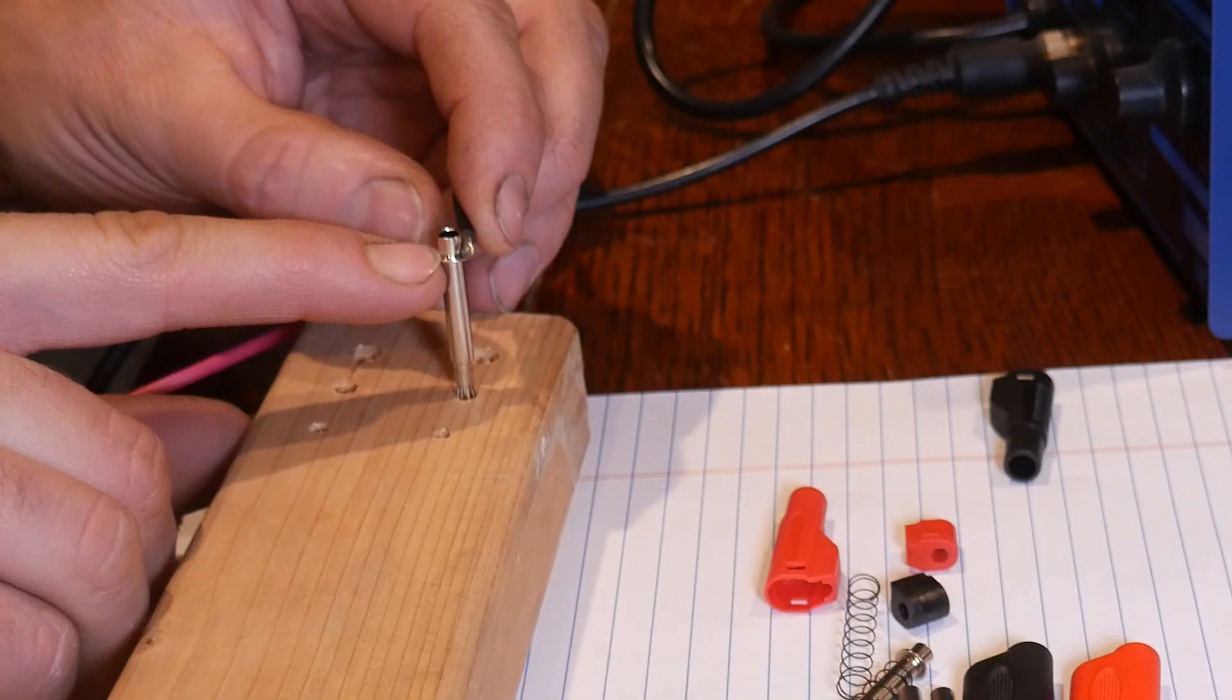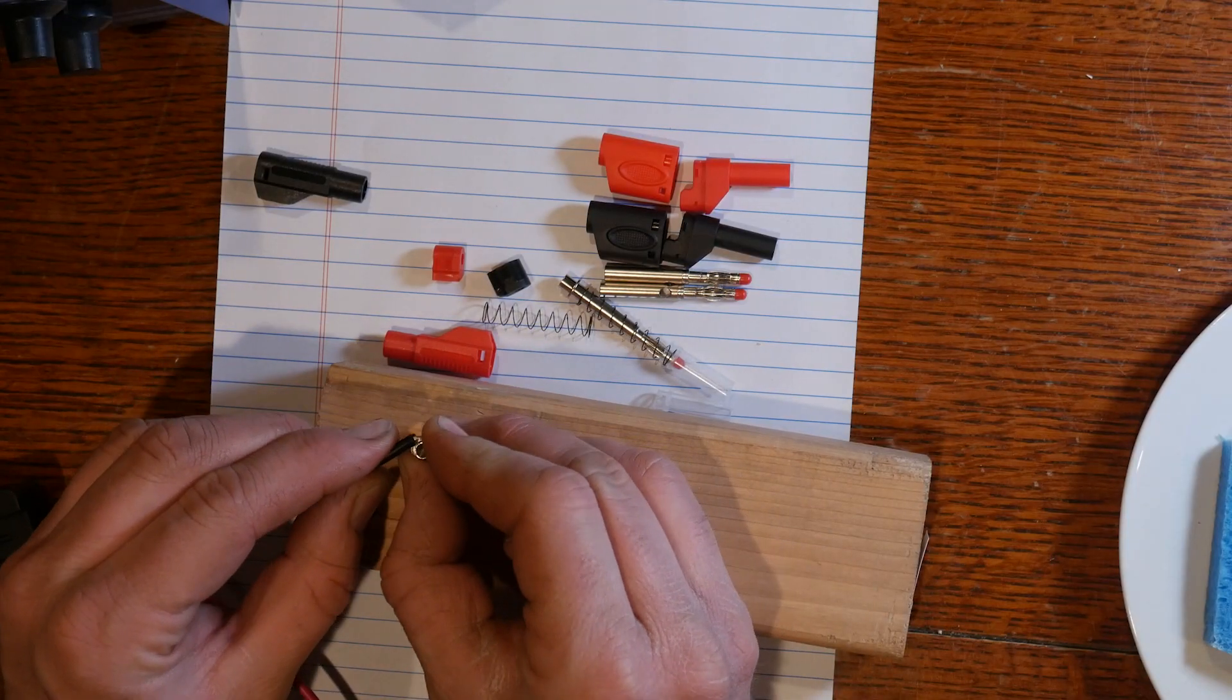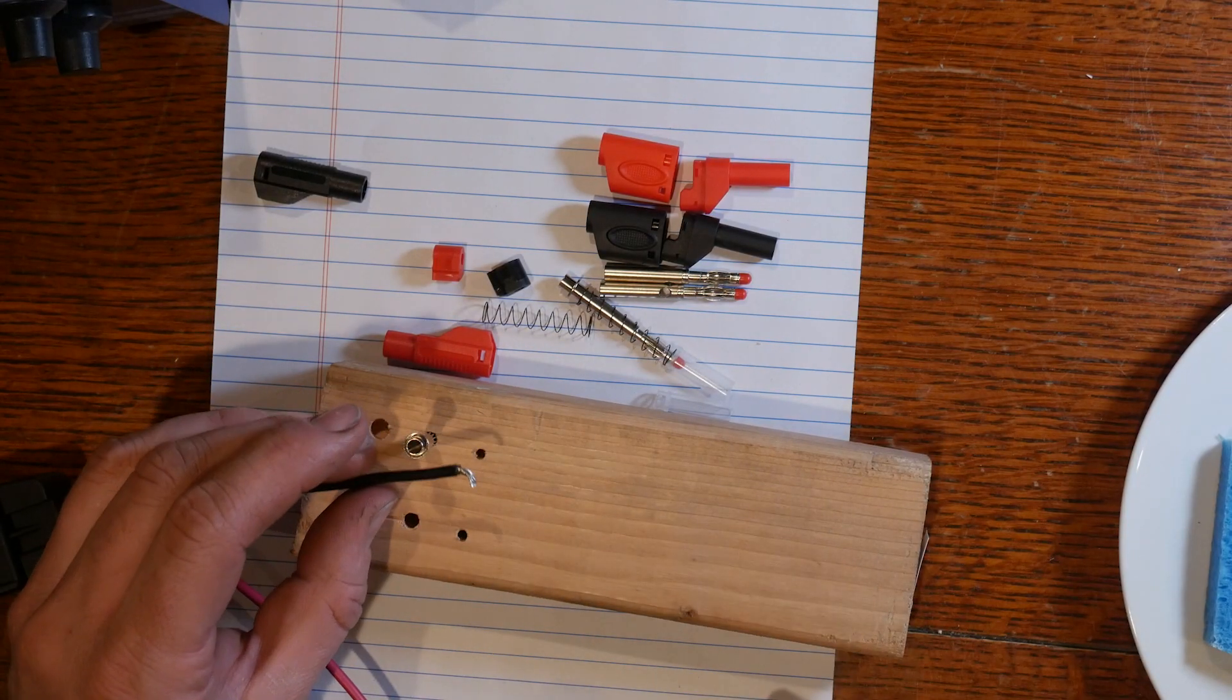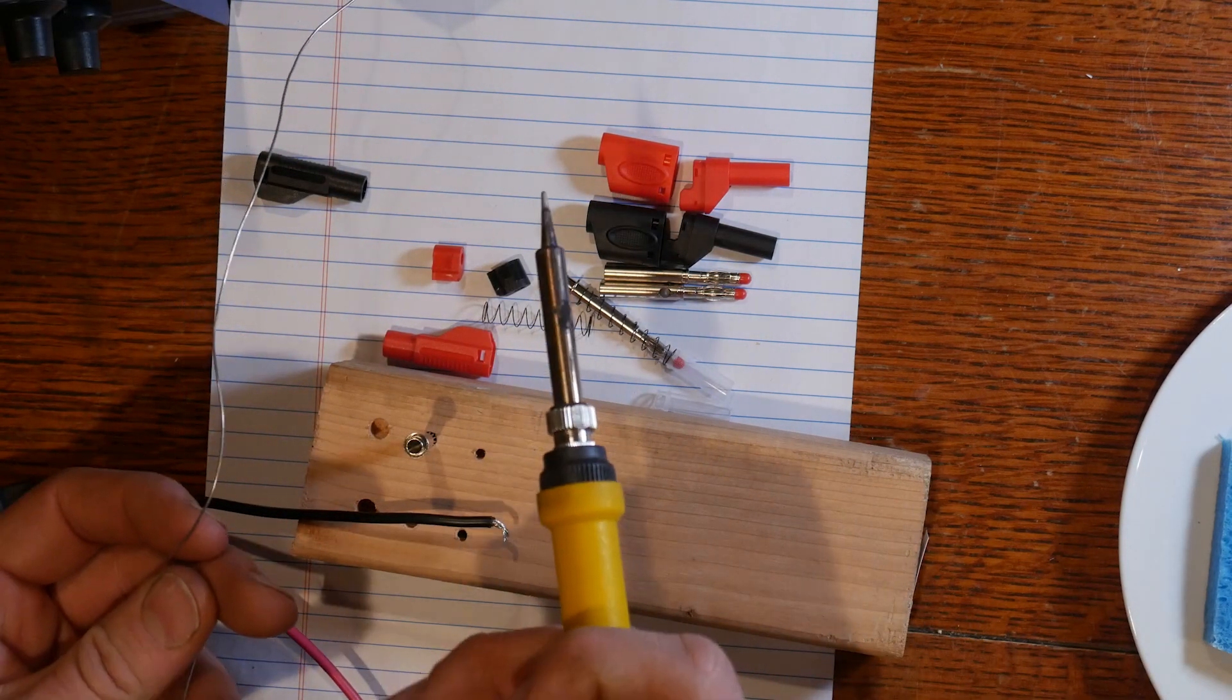Now I haven't done one of these yet, I haven't soldered one, so this is going to be a learning experience. I think what the instructions show is just right on top of this little lip they want you to lay the wire there and solder it in place. I think we'll try it just around the one side. I think what I'll do also is I'll tin the wire first. We'll just apply a little bit of solder to it.